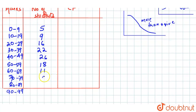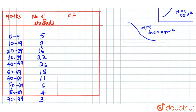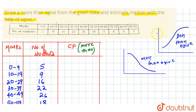In addition to the given class intervals, we assume a class interval from 100 to 109 having zero frequency. We then find the cumulative frequency. For the more-than curve, we start with the total number of students. After calculating all these numbers, the total comes to 120 students.